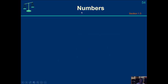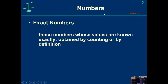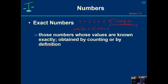Let's talk about two ideas in numbers. The first is exact numbers — numbers that are either defined or obtained by counting. If I count 1, 2, 3, 4, 5 lines, that equals exactly 5 lines. I can also get an exact value by definition: 1 mile, by definition, equals 5,280 feet. That is exact by definition.